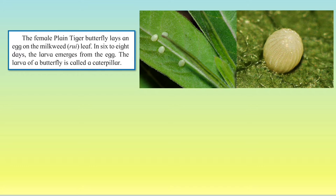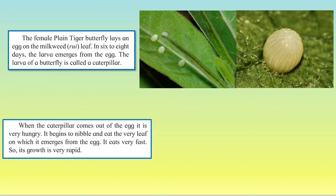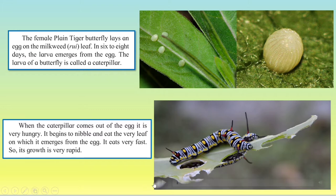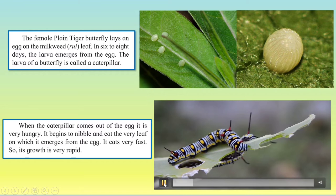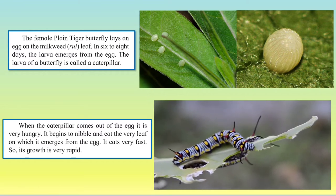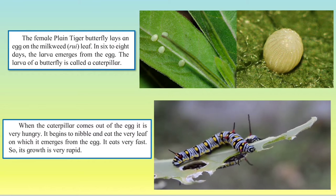In six to eight days, the larva emerges from the egg. Emerging means to come out. The larva of a butterfly is called a caterpillar. When the caterpillar comes out of the egg, it is very hungry. It begins to nibble and eat the very leaf on which it emerged from the egg. It eats very fast and begins to grow rapidly. You can see on your screen the caterpillar busy eating away the leaf.